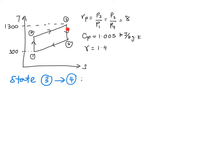You have state 3 to state 4, which is actually an isentropic expansion. This is an ideal cycle, so your S3 equals S4. You make use of this isentropic relation, which is T3 over T4 equals (P3 over P4) to the power of (gamma minus 1) over gamma.